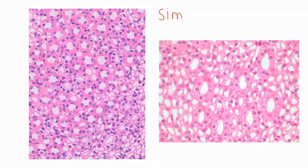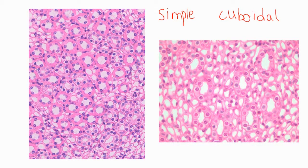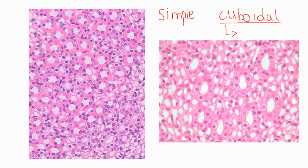Next type of epithelium — this is another kind of simple epithelium, so we're still talking one layer. But the shape this time is called cuboidal. Even if you weren't here this morning, if I'm talking about a cuboidal cell, what kind of shape is that going to have? Cuboidal cells — the way you define a cuboidal cell is it's just as tall as it is wide.